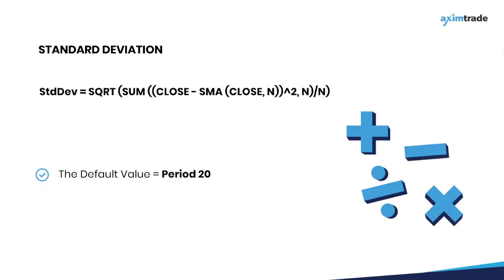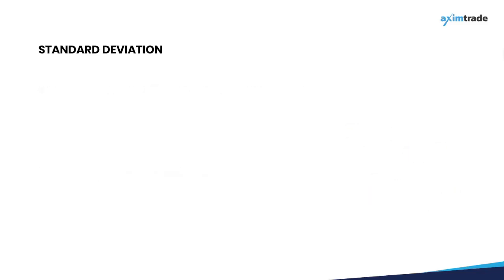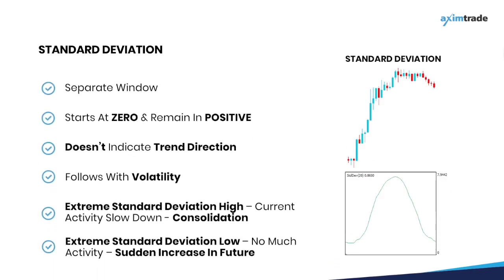Now let's look at the features of this indicator and how to interpret it. The standard deviation appears in a separate window under the chart as a single main line which starts at 0 and always remains positive. It is important to note that the indicator does not show the direction of the trend, as it follows along with the increase or decrease of volatility regardless of the direction of the market. A rise in the standard deviation indicates a period of high volatility, as the closing price and the average closing price usually differ significantly. Extreme standard deviation highs signal that current activity will soon slow down and will be followed by a period of consolidation.